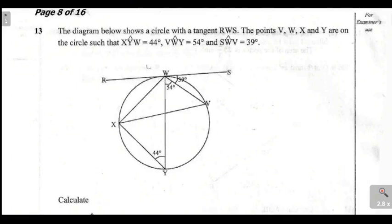The question reads: the diagram below shows a circle with a tangent RWS. You can see right here that this circle is having a tangent, which is RWS. The points V, W, X, and Y are on the circle such that...